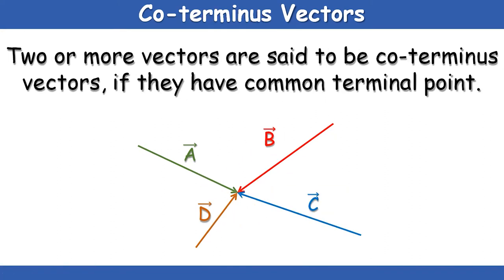In the same way, co-terminus vectors — just opposite to co-initial. Two or more vectors are said to be co-terminus if they have a common terminal point; that is to say, if they end up at the same point. They are converging: vector A, B, C, and D are all converging at a given point. So they are known as co-terminus vectors.